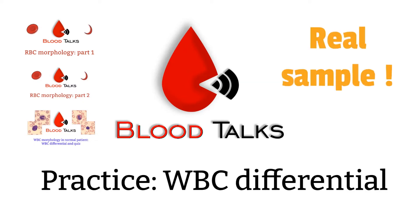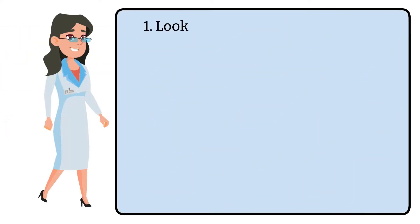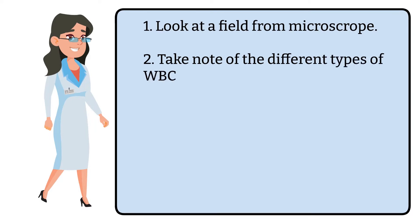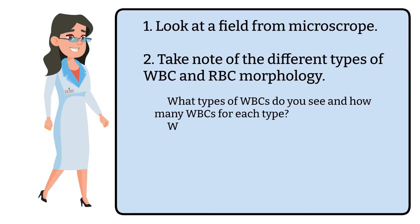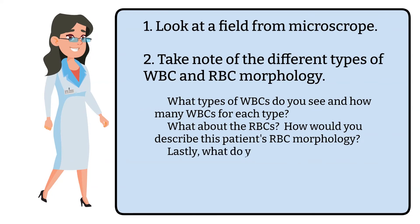Today we will be practicing the white blood cell differentials. I will show you a microscope view and give you about five seconds to do your differentials. Write down the type of cells you see and how many of each type there are. For example, you see five segs and one band for white blood cells, and normochromic, normocytic for red blood cells.